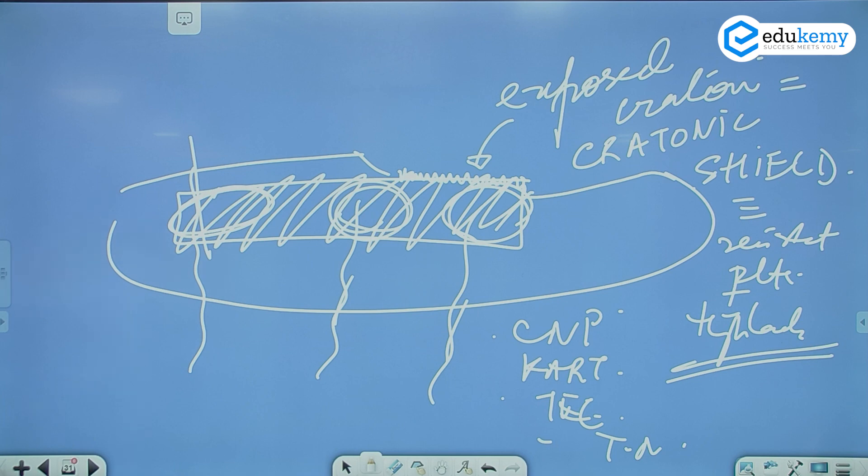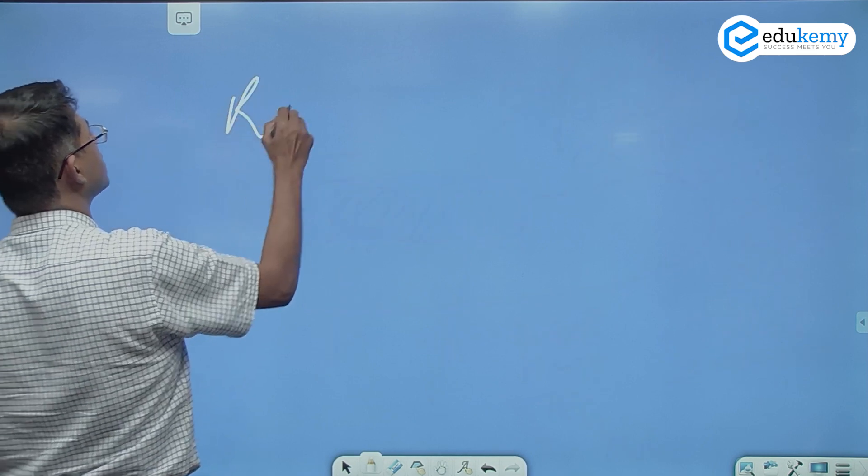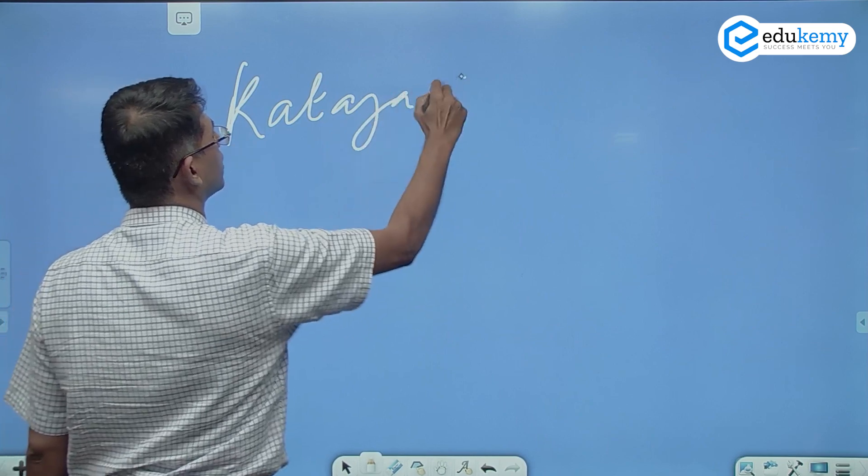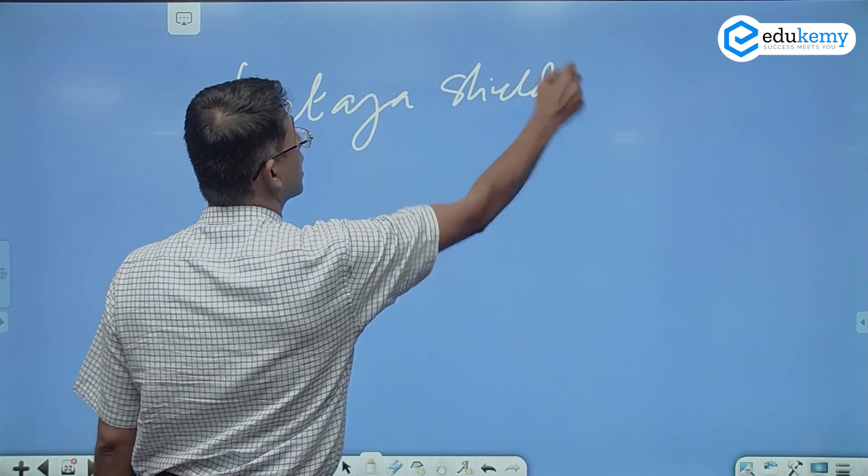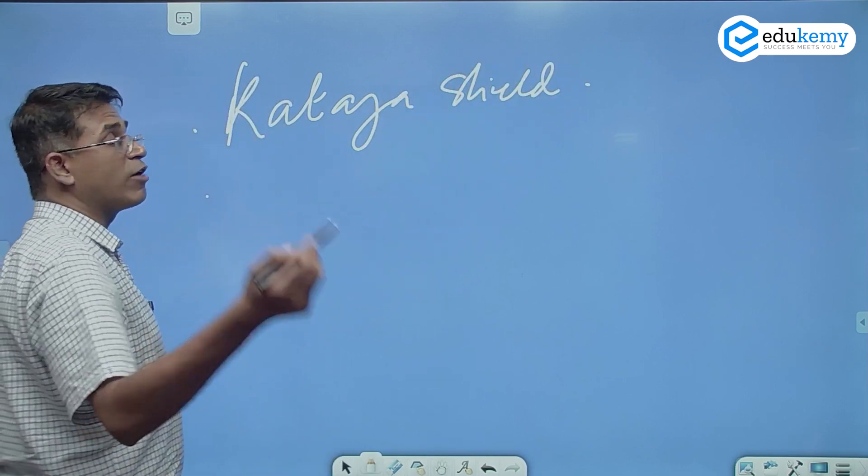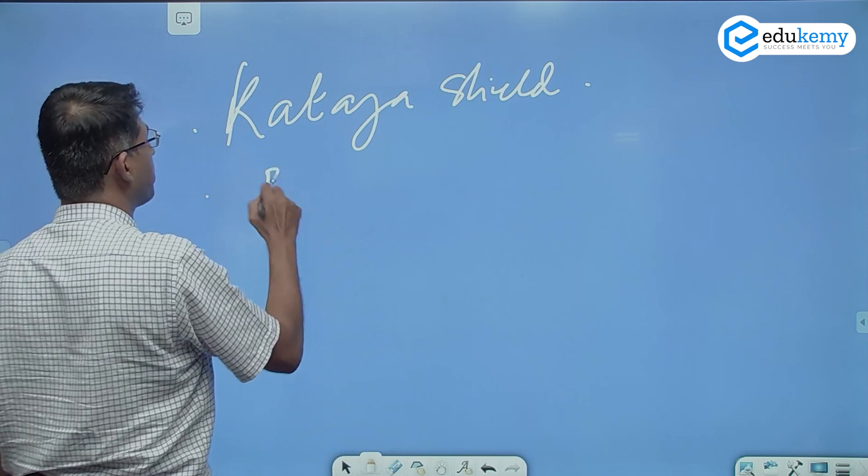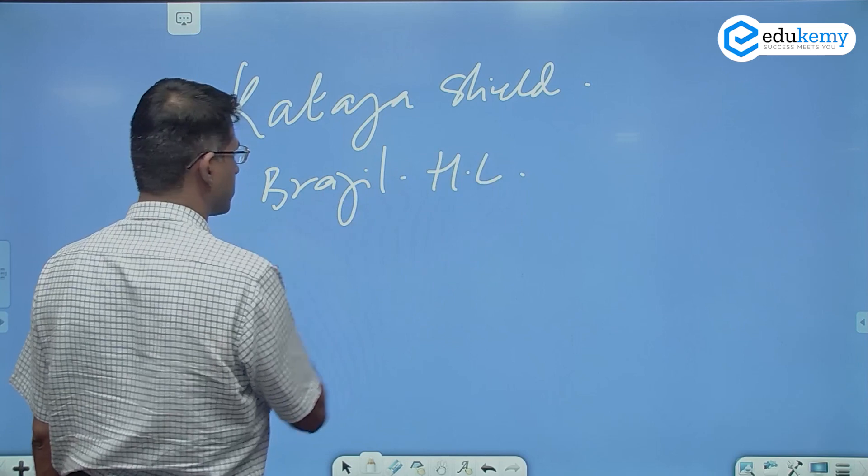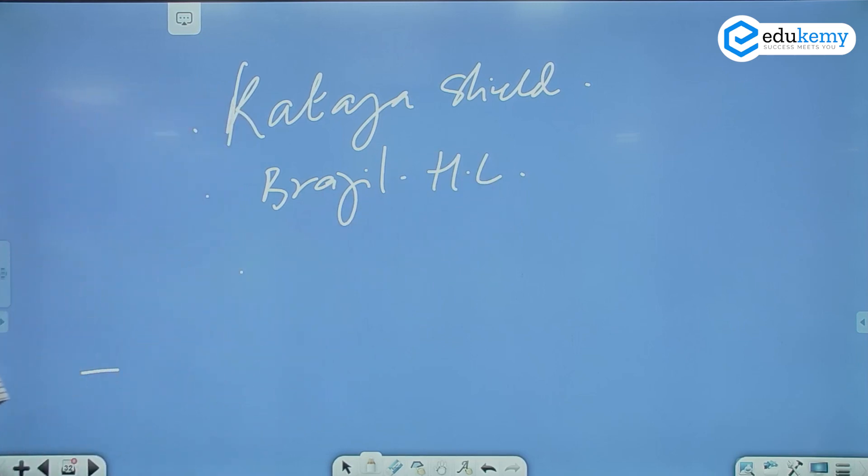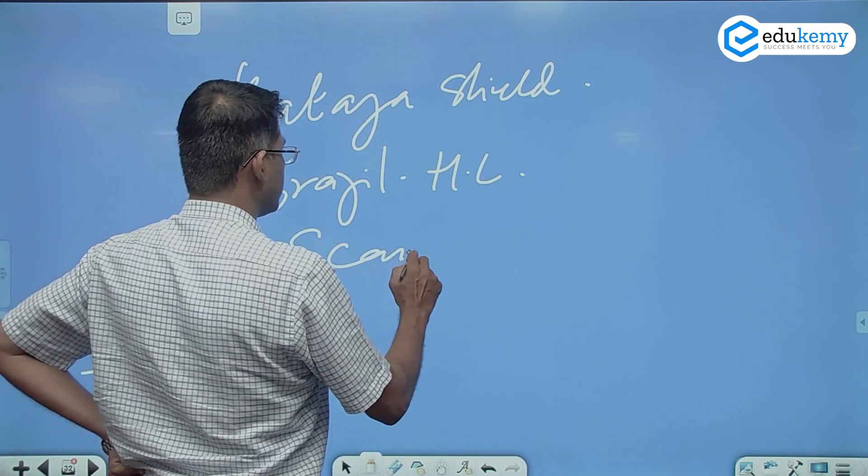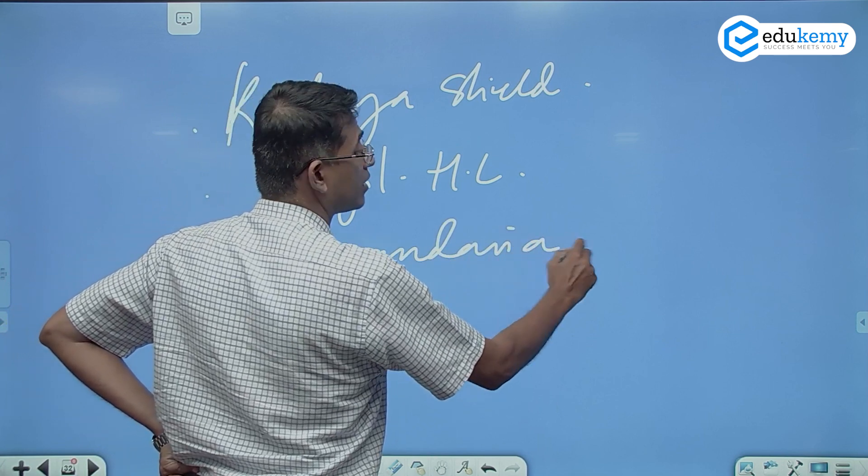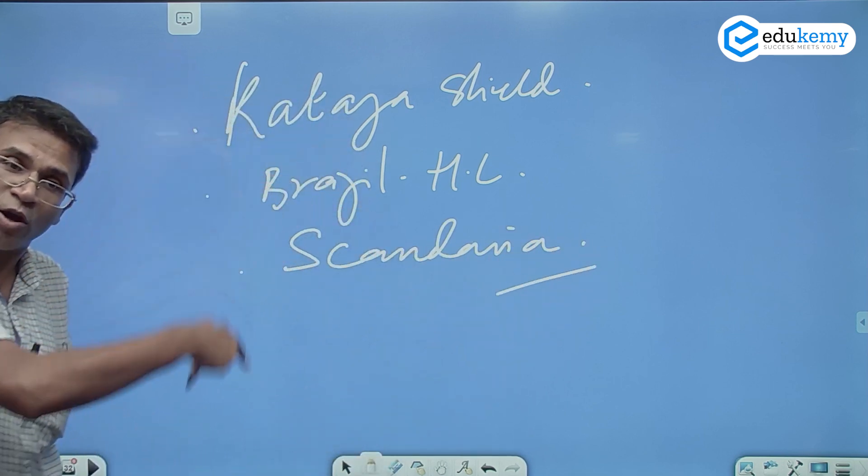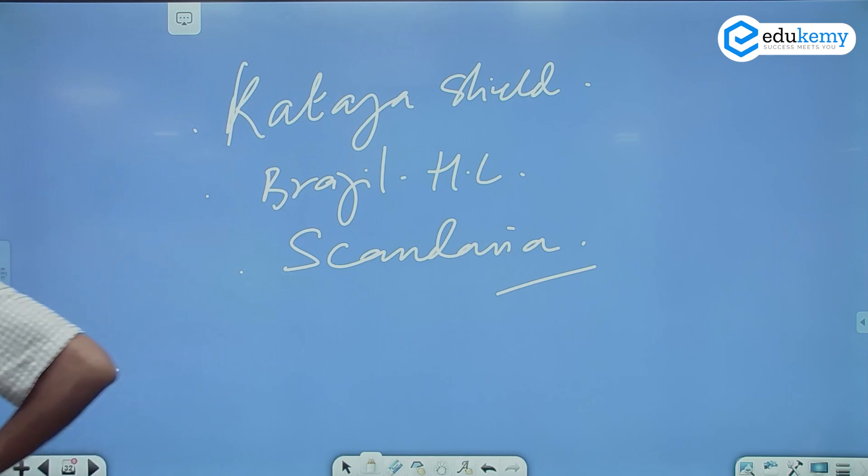In Africa we have what is called as the Katanga shield. Katanga shield in southern Africa. In South America we have the Brazil highlands. The Brazil highlands. They are all elevations of that type of rocks. You heard about Scandinavia, right? Scandinavia highlands. Norway, Sweden. They are Cratonic highlands. They are Cratonic shields.